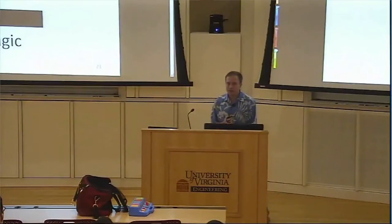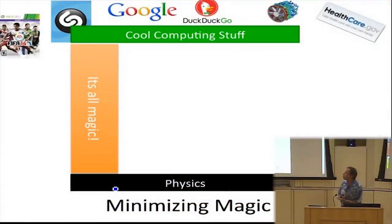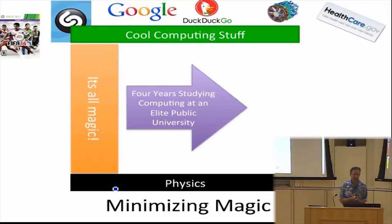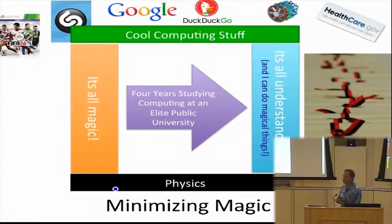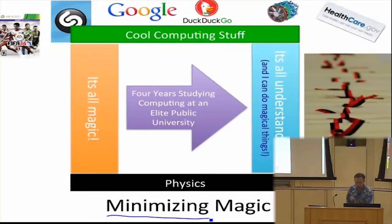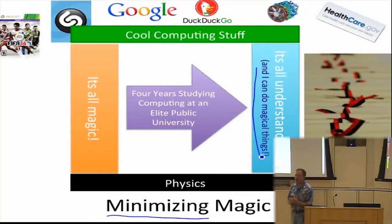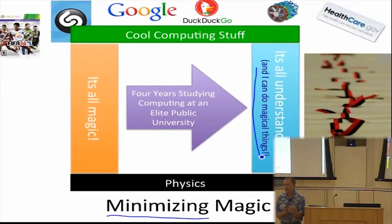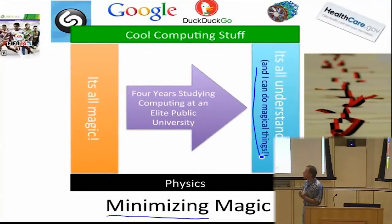As a computer science student, what you should be doing is turning that magic — after however many years you spend at whatever elite university you go to — into something that's all understandable. That's not because you don't want things to be magical; it's because once you understand it, you can do your own magical things. By the end of your CS degree you should feel like you pretty much understand everything going on between these high-level applications and a very low level of how they're working.